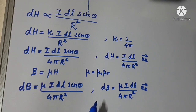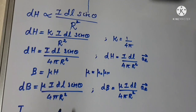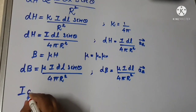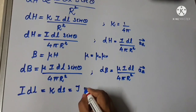We can have different current distributions: line current, surface current, and volume current. We define I as the line current density in amperes per meter, K as the surface current density in amperes per meter squared, and J as the volume current density. The source elements are related as I dL equals K dS equals J dV.